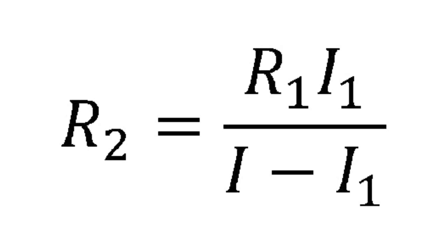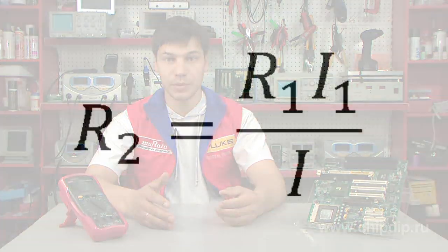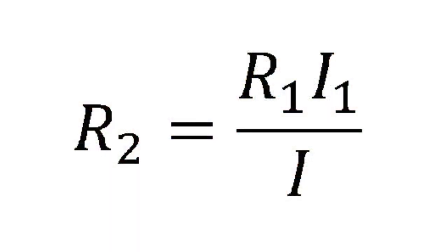If the desired measurement limit far exceeds the rated current of the ammeter, then this current in the denominator can be neglected, and the formula will look like: R2 equals R1 multiplied by I1 and divided by I.